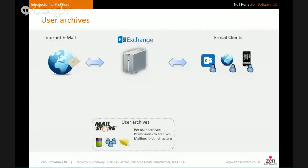Each user has their own user archive in MailStore. These aren't separate storage locations but are like virtual folders within the archive dedicated to each user. You can define permissions on user accounts to allow one user access to another user's archive. When a client logs into MailStore, they have access to their own archive and any folder structure it contains. When archiving mailboxes, MailStore brings in the whole folder structure, so users see not just all sent and received emails, but their entire folder hierarchy.